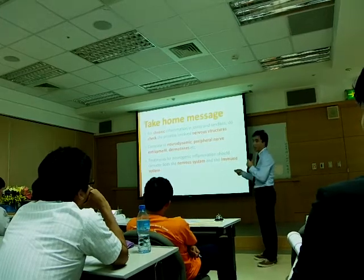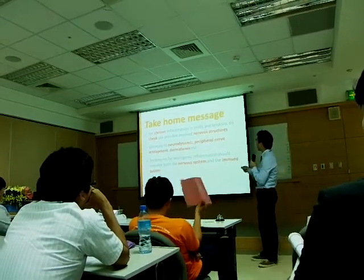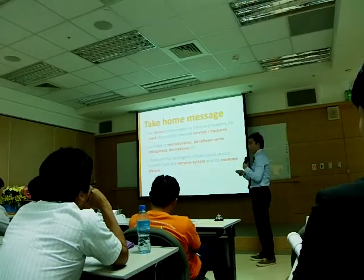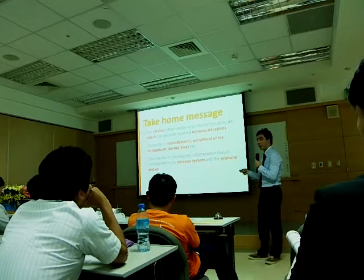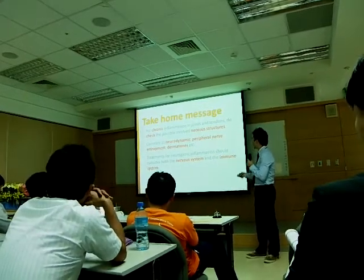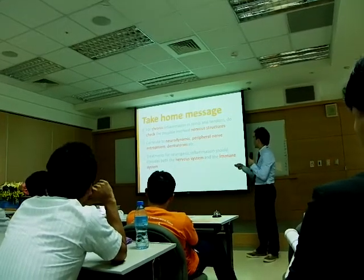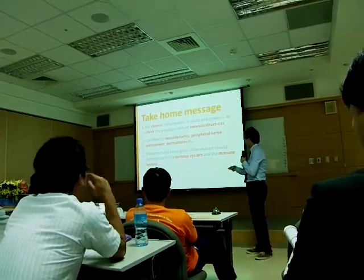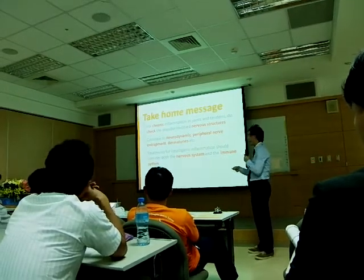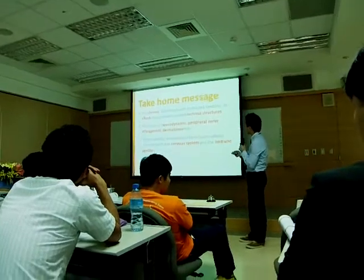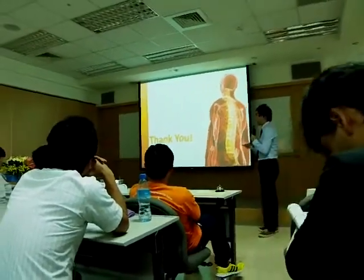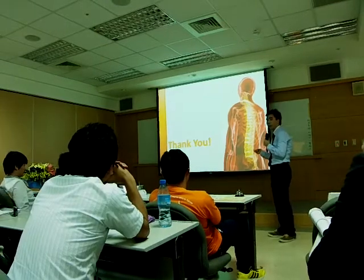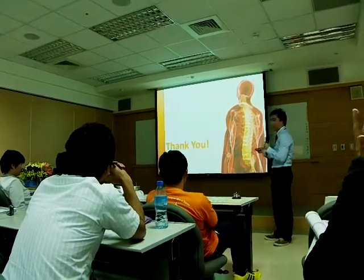So this presentation, I would like to bring out this message: for chronic inflammation in musculoskeletal conditions — joint, tendon — it is necessary for us to check the possible irritated neural structure, for example the dermatome and the peripheral nerve, and try to correlate these findings through the neurodynamic test and spinal palpation. Treatment for neurogenic inflammation should consider both the nervous system and the immune system. I wanted to give big thanks to my inspiring tutor, David Butler, for teaching me the neuromatrix concept and neurogenic inflammation. And my colleague George Zhao for making the PowerPoint.